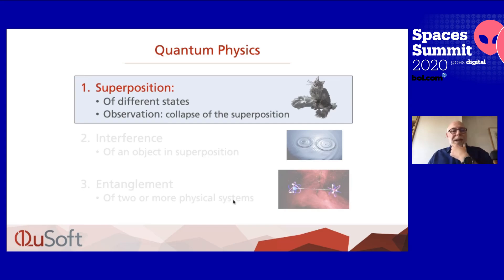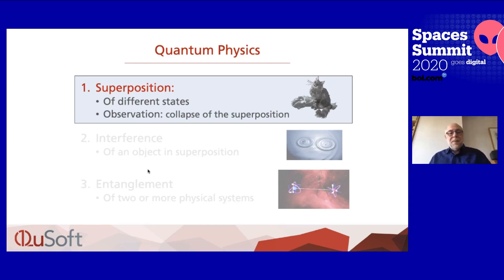So that gives us item one: superposition. Electrons and photons — objects — can be in different states at the same time. And when you measure them, when you observe them, they collapse and you find them in one of the states they were in superposition of.